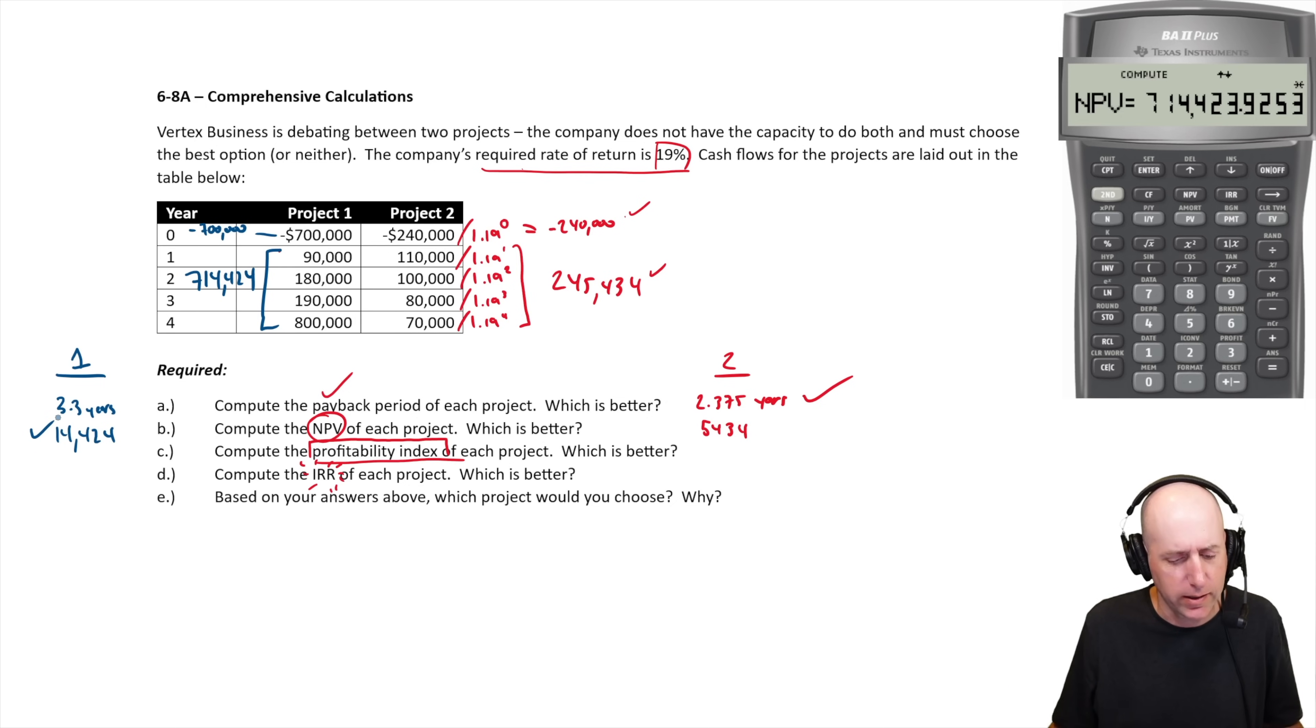Compute the profitability index of each project. Now, because I split out my calculations the way I did, this is easy, you just divide the inflows divided by the outflows. So divide 245 by 240, divide 714 by 700. So let's do the 714 divided by 700. 1.021.